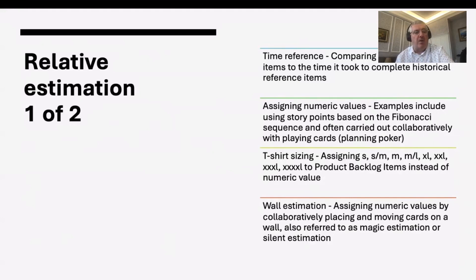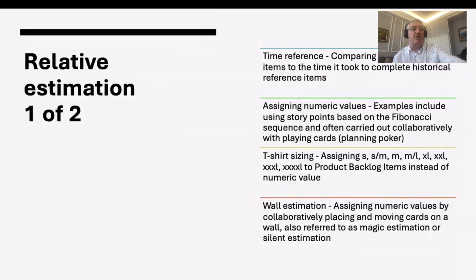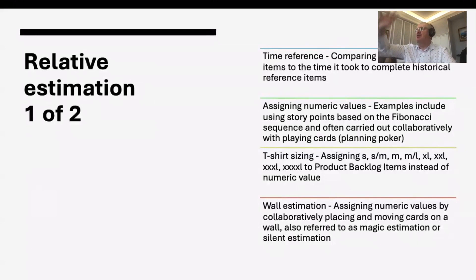Where it degrades is with planning poker. It's a nice conversation, but I think it's a waste of time. I worked with a team at a utilities company and we took seven hours to estimate a backlog. We then used an alternative technique that took 15 minutes and gave us a slightly better answer. T-shirt sizing is an even quicker way to get a size — small, medium, extra large — and you might map story point numbers to those as well, since people like numbers for forecasting.